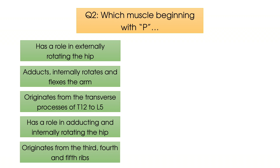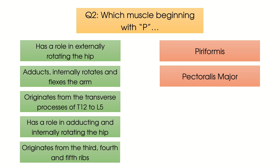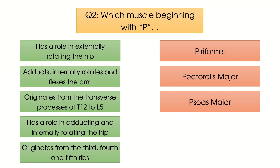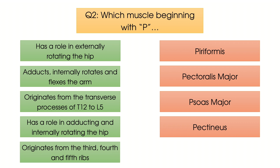Let's go through these individually. The muscle that has a role in externally rotating the hip is piriformis. Which muscle adducts, internally rotates and flexes the arm? Pectoralis major. Psoas major is the muscle which originates from the transverse processes of T12 to L5. The P muscle which has a role in adducting and internally rotating the hip is pectineus. And finally, the muscle that originates from the 3rd, 4th and 5th ribs is pectoralis minor.